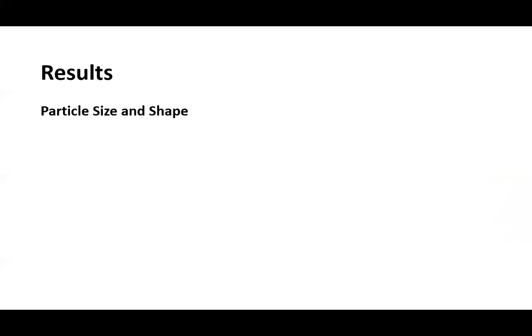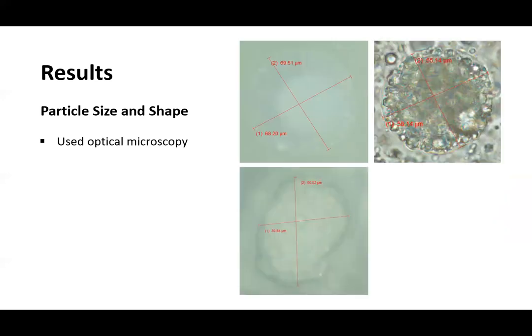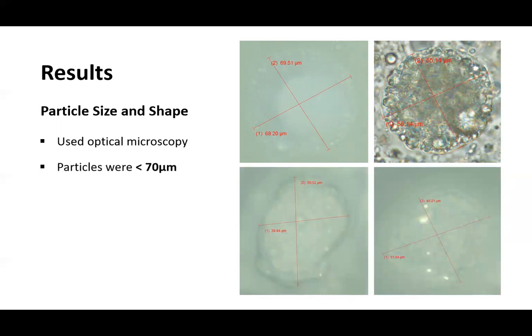Particle size and shape: Optical microscopy was used. The images indicate the size and shape of the particles. Measured particles were less than 70 micron. A roundness factor was calculated, which tells us that particles were generally spherical, some were oblate.